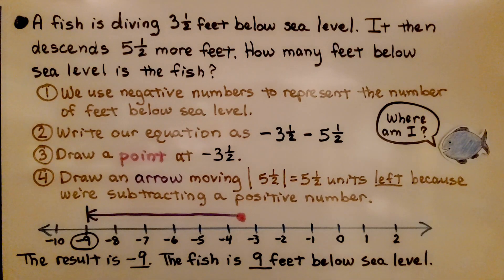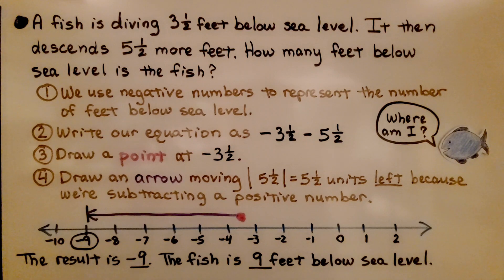Here's our first example. A fish is diving 3 and a half feet below sea level. It then descends 5 and a half more feet. How many feet below sea level is the fish? We use negative numbers to represent the number of feet below sea level.